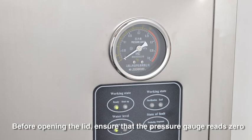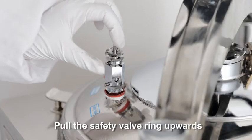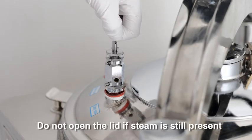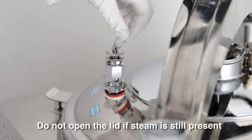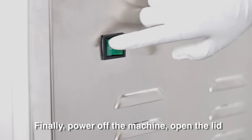Before opening the lid, ensure that the pressure gauge reads zero for the safety valve ring upwards. Do not open the lid if steam is still present. Finally, power off the machine, open the lid and remove the sterilized items.